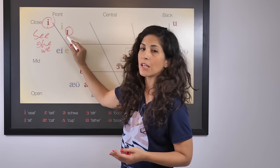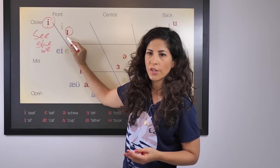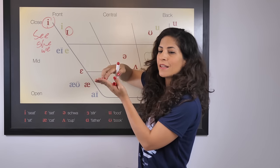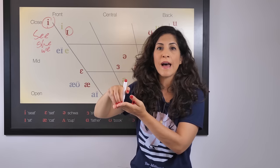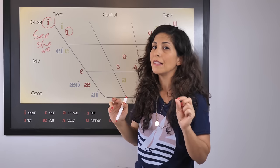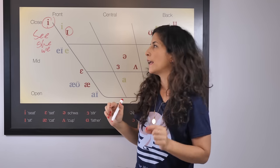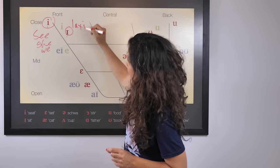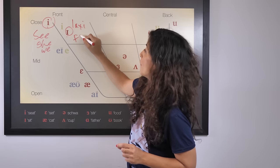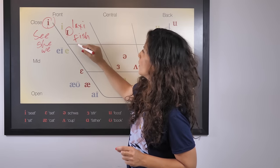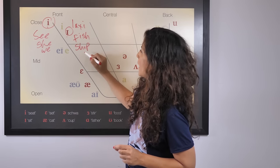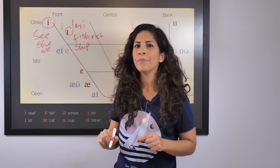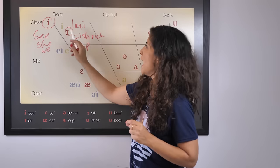That is in comparison to the relaxed E sound that also exists in American English. As you can see, it's a little lower on the chart — that means the tongue is a little lower. One way to do that is to just drop your jaw a little bit. It's a relaxed sound, a relaxed E sound. We find it in words like 'fish,' 'ship,' and 'rich.' A relaxed E sound.